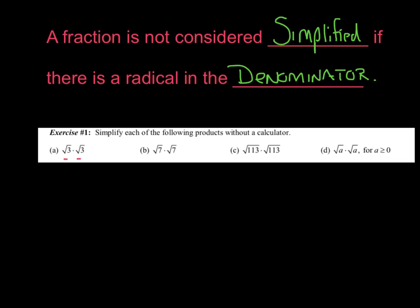Remember, they're both under the radical, so you really want to say radical 9. But what's the square root of 9? It's 3. Pretty convenient. Radical 3 times radical 3 ends up being just 3.